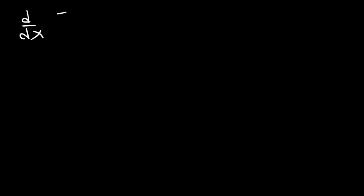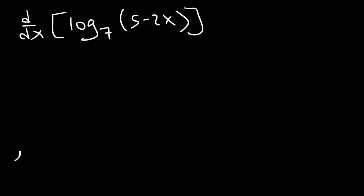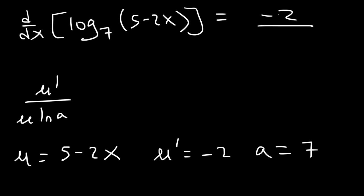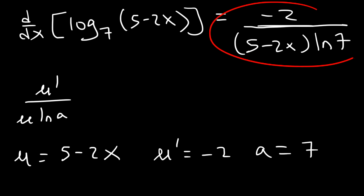Try this one: log base 7 of 5 minus 2x. So u is 5 minus 2x, u prime is negative 2, and a is 7. Using the formula u prime over u ln a, that's negative 2 divided by the quantity 5 minus 2x, times the natural log of 7. And that's it for that example.